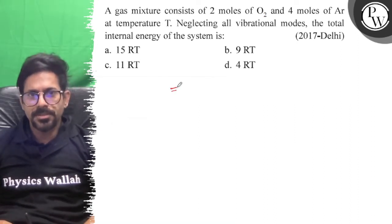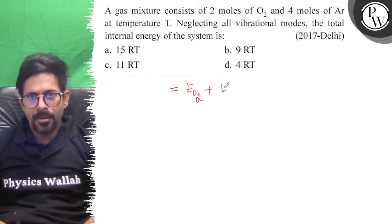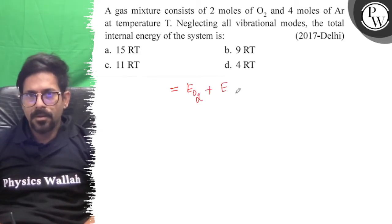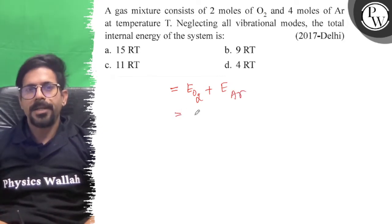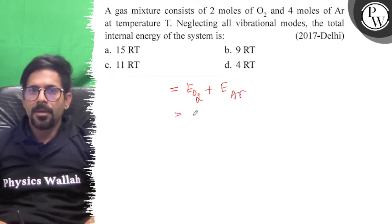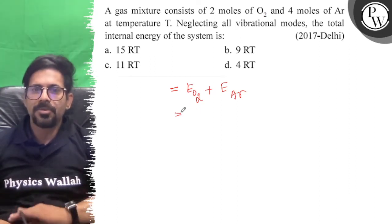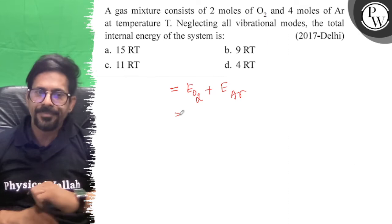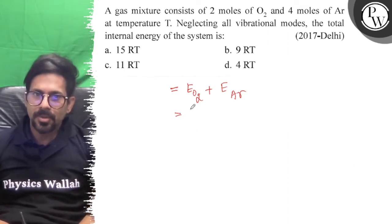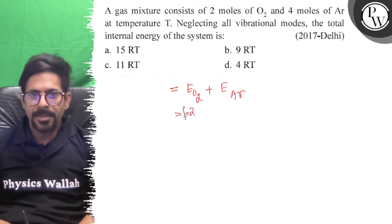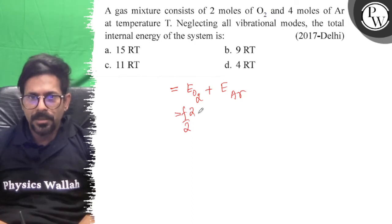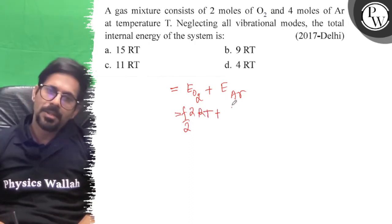So total energy of the system equals the kinetic energy of oxygen plus the kinetic energy of argon. Now kinetic energy: 2 moles, that is equal to μRT. So μ is equal to 2 moles. So F/2 times μRT plus F/2 μRT.